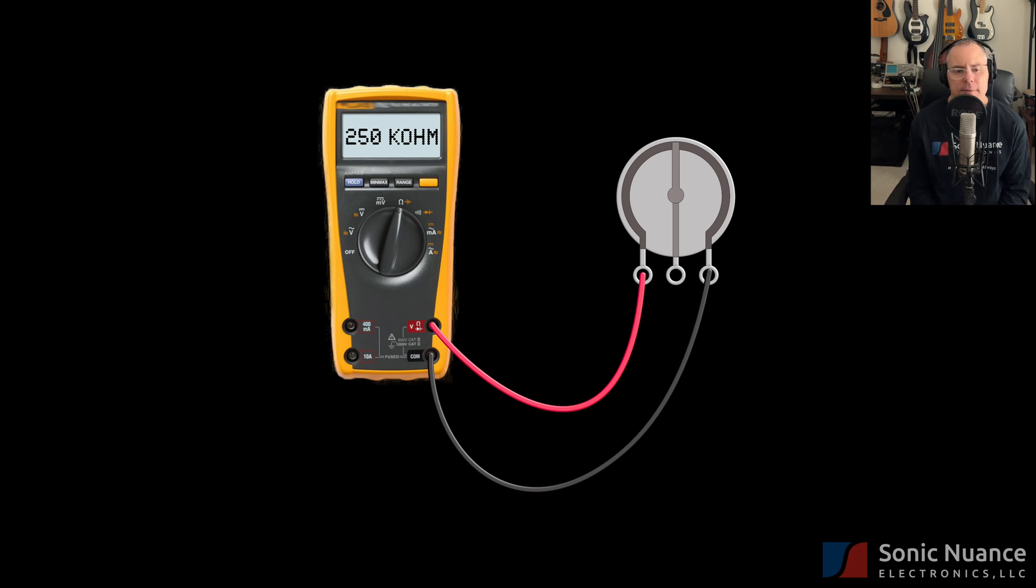In this case, we have the DMM measuring the resistance between the outer terminals. And you can see here that it's measuring 250k ohms in our idealized potentiometer here.